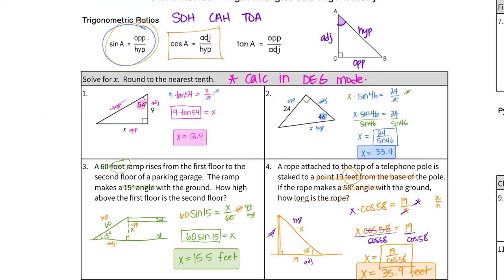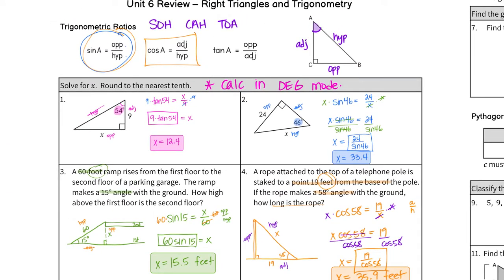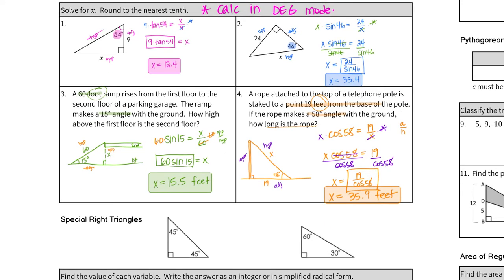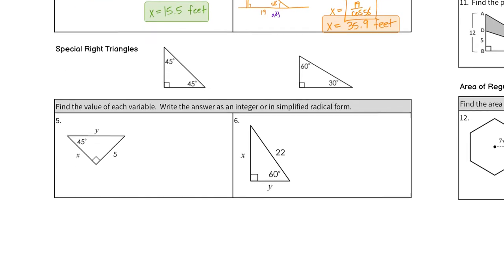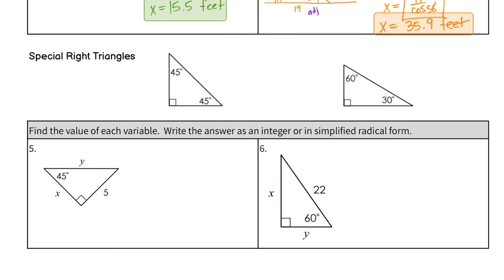So those are the four questions that go with our trig ratios. Tomorrow's test is 12 questions, and the first five or so have to do with this stuff — that's almost half the test. Next, we're going to review special right triangles.